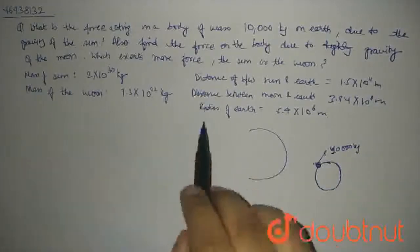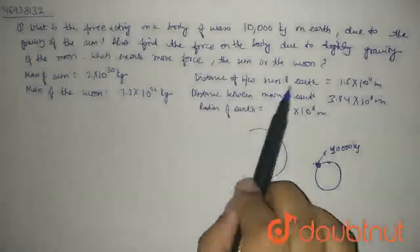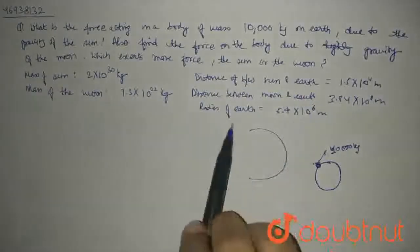And we have the rest of the details, like mass of sun, mass of moon, distance between sun and earth, distance between moon and earth, and radius of earth.